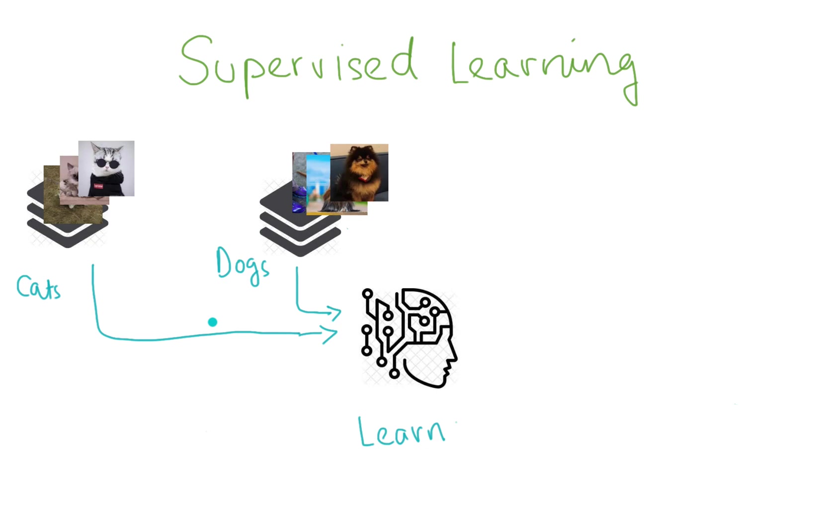You give the machine a lot of images in this example, you label them, you could add more images, label them, and the machine learns from it. These are labeled images as we mentioned. These are dogs and cats.